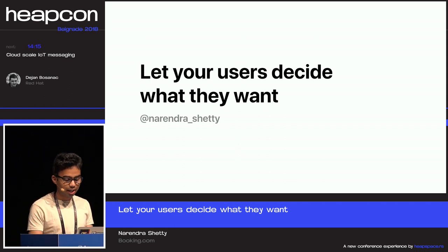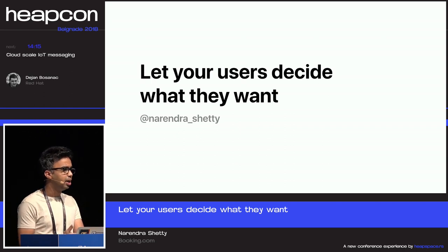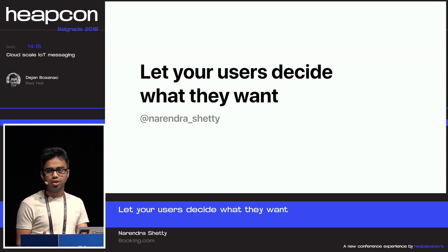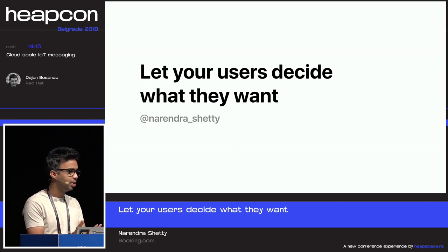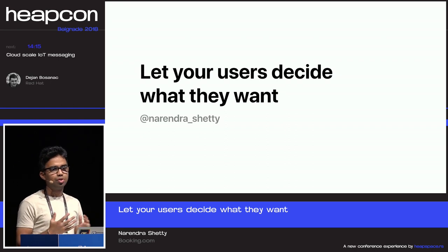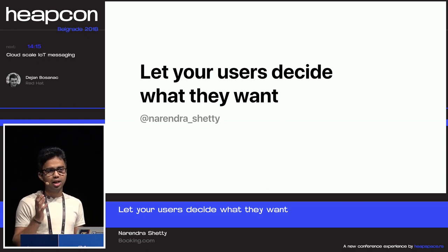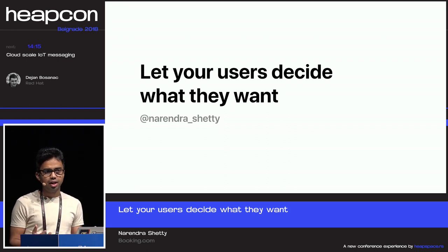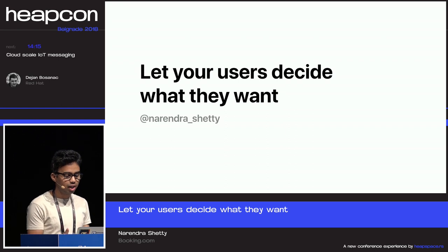My talk is all about letting your users decide what they want. Everyone here would be building some products, some websites, and you always come across one situation where you have to take a call whether a feature has to go live — the UI, the UX, how the user journey happens. The main thing is to bring that decision to the users, give them all the options, and let the users decide which one stays on the product. So that's what I'll be mostly talking about.